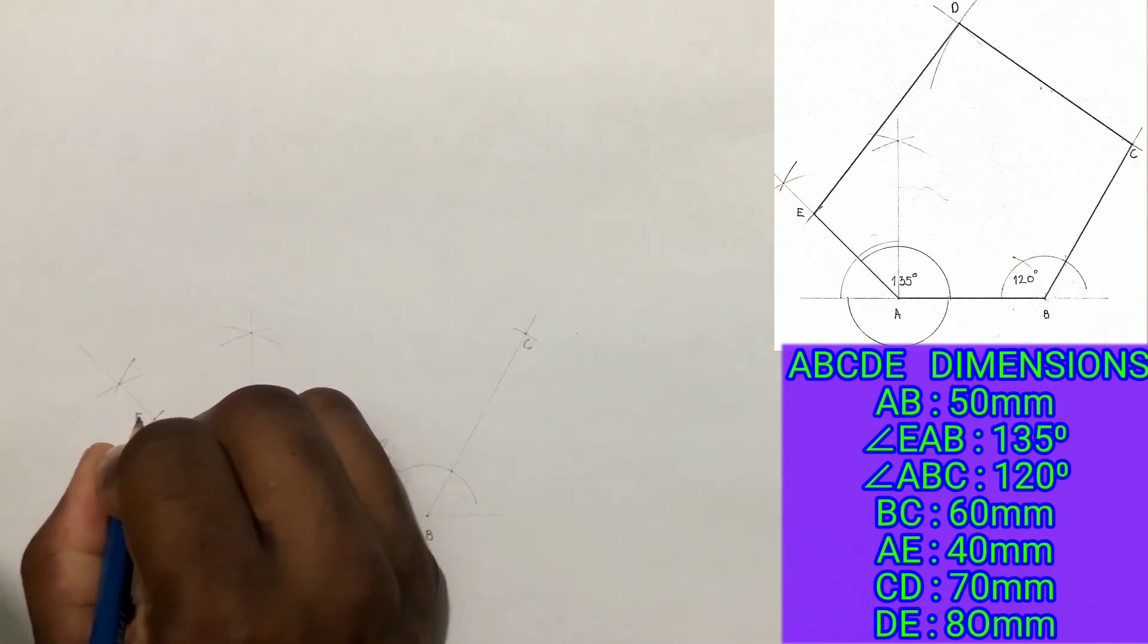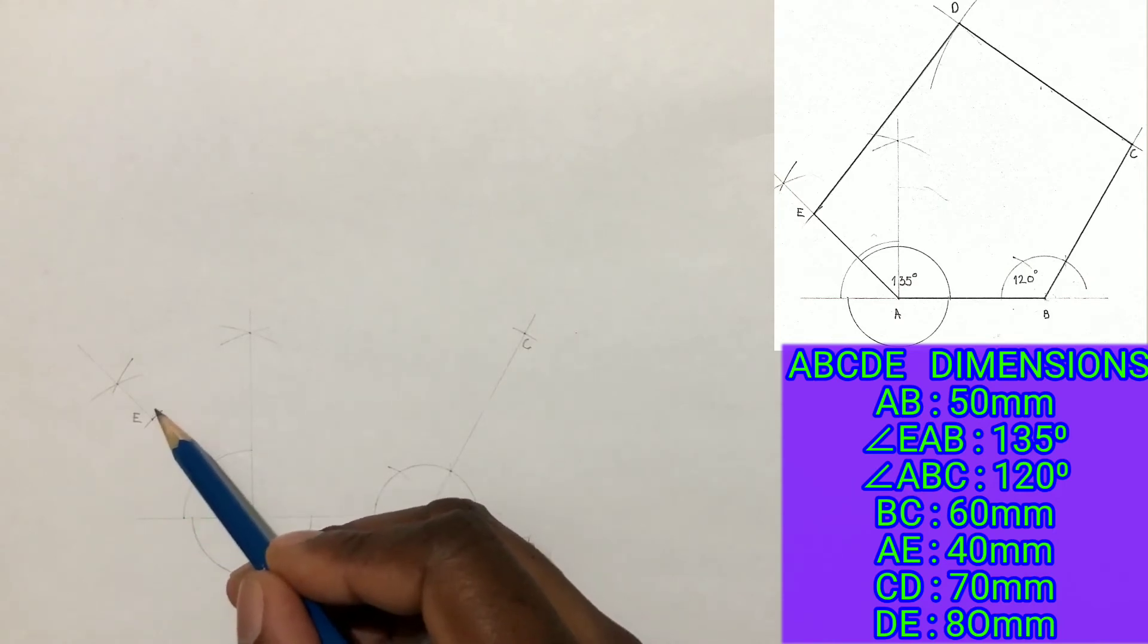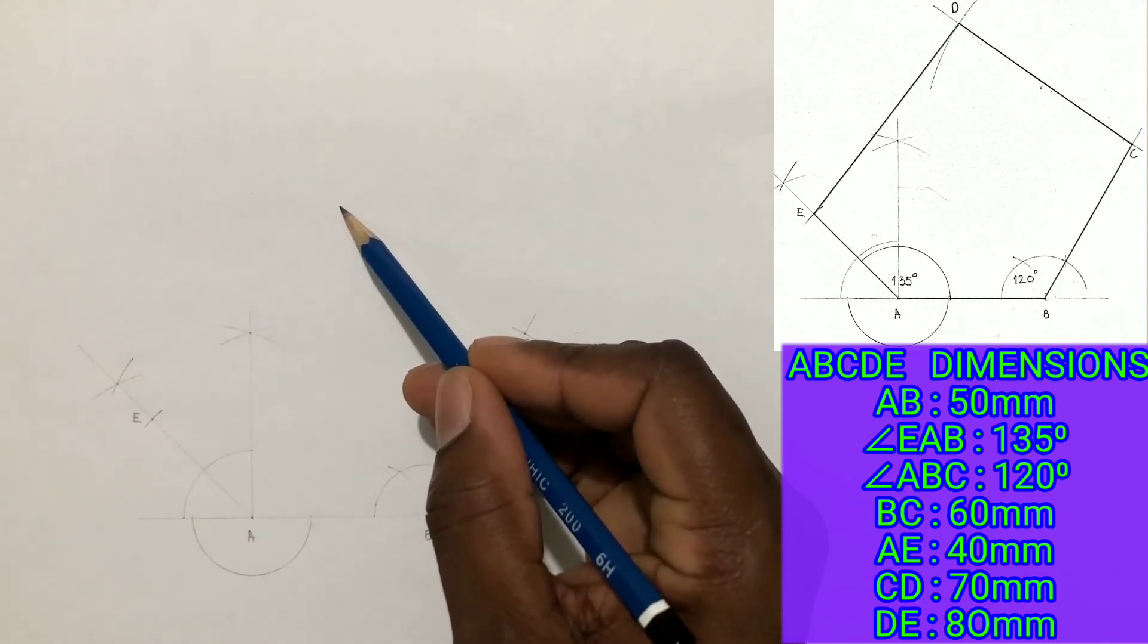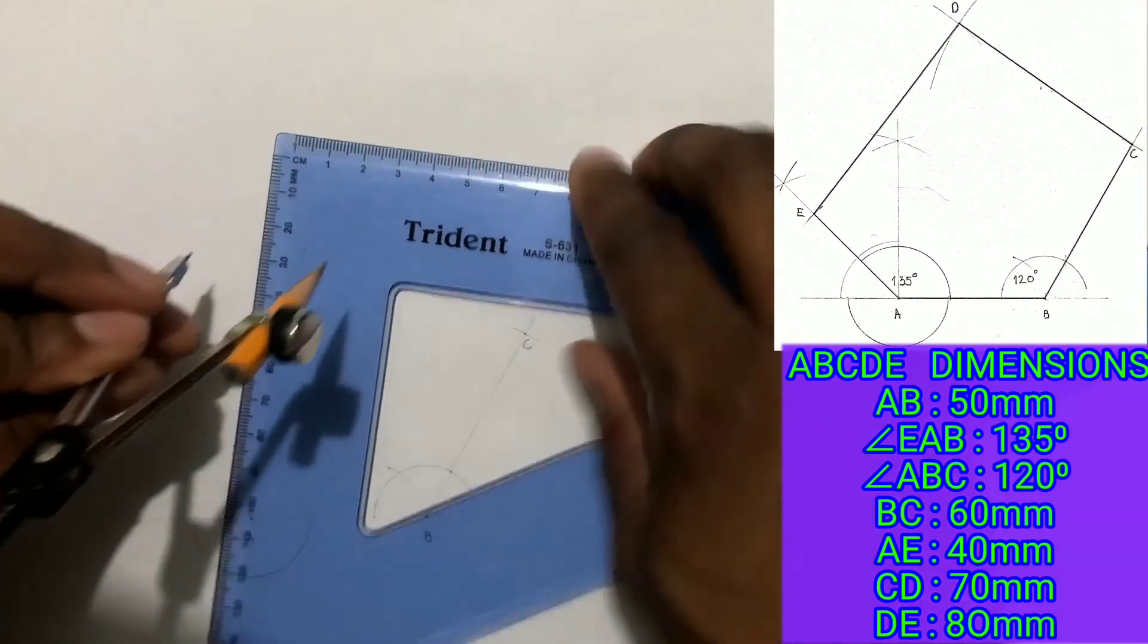Based on dimensions given, from C to D measures 70 millimeters and from E to D measures 80 millimeters. Open your compass to a radius of 70 millimeters.